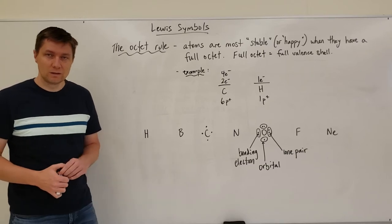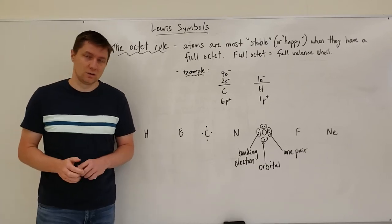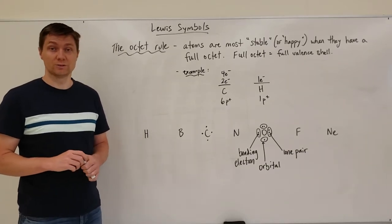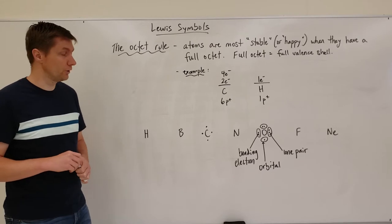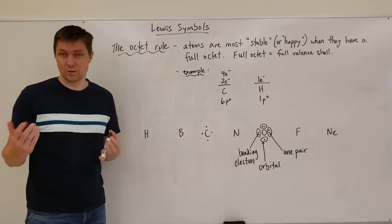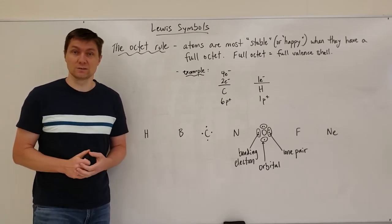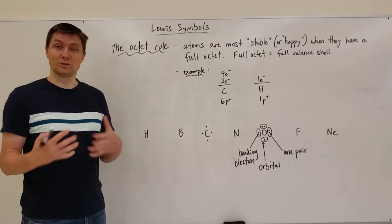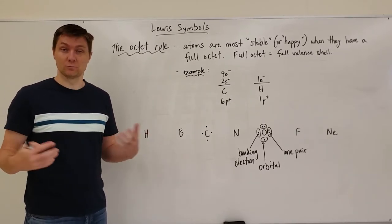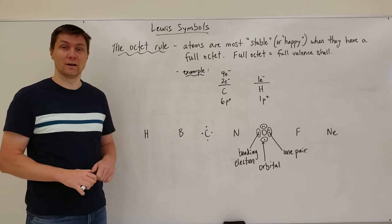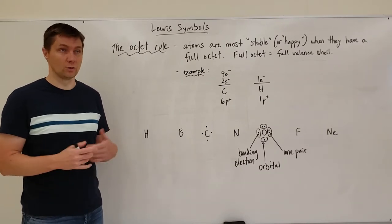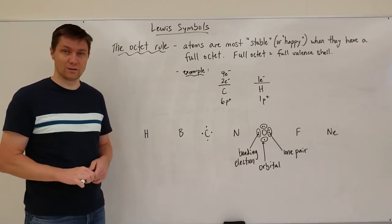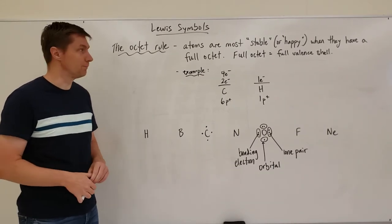The next concept we need to touch on is what's called Lewis symbols. What you're going to learn how to do is basically draw these diagrams and what we can learn about each individual atom because of their Lewis diagram.